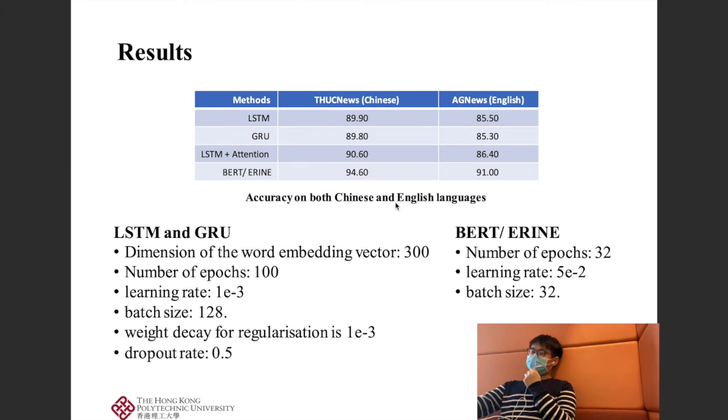I performed the experiment for both Chinese corpus and English corpus text classification tasks. The THU is the Tsinghua News, and the AG News is an English text classification task. We used the LSTM, GRU, and BERT for text classification.